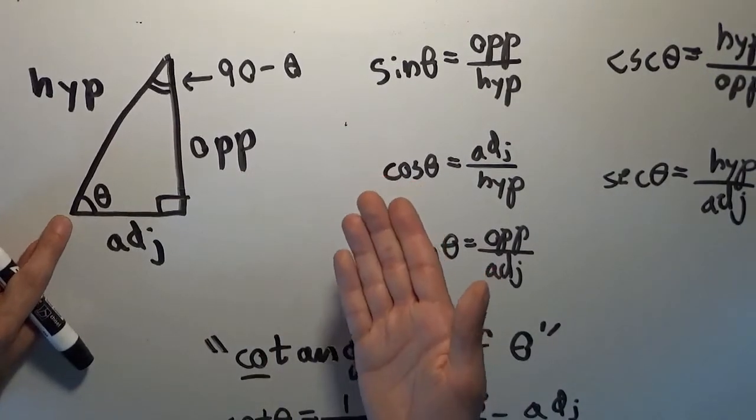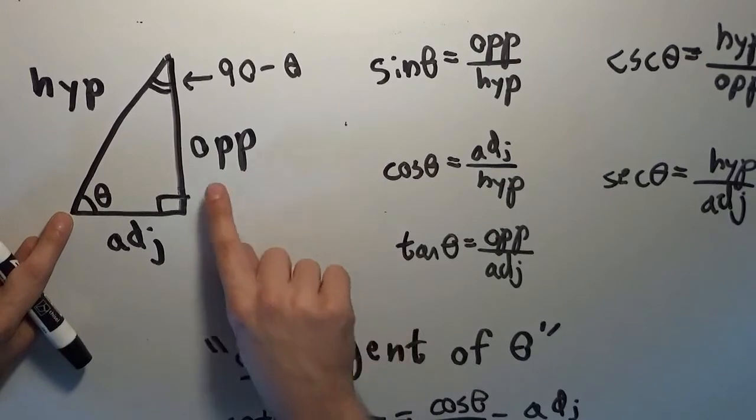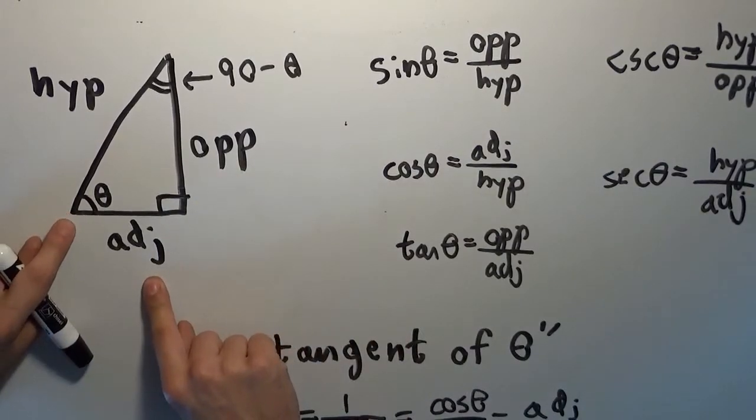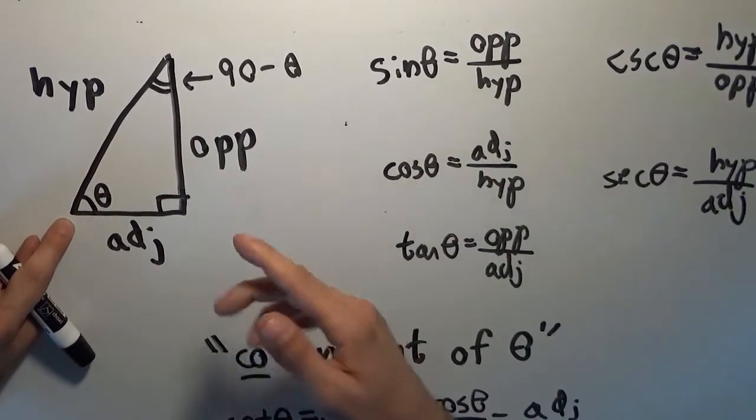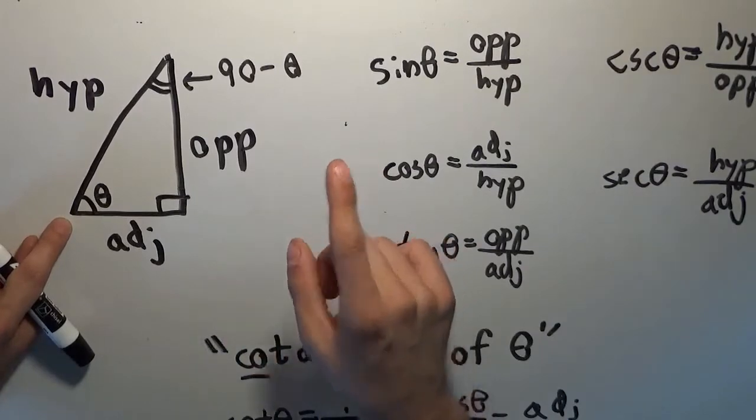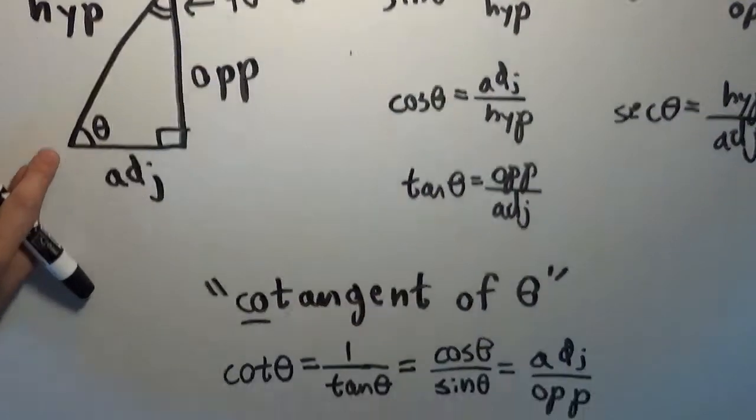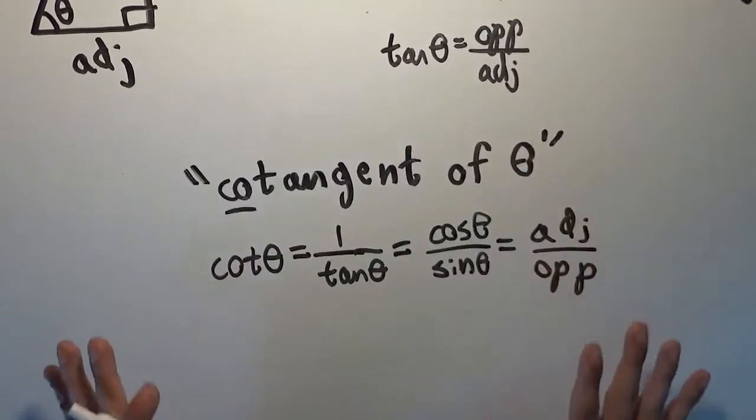But also, they're reciprocals, because the tangent of theta is opposite over adjacent, but the cotangent of theta is adjacent over opposite. So they are both reciprocals, and they are complementary functions. So that's just cotangent and tangent. The other two don't have that property.